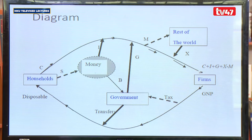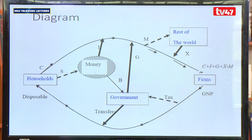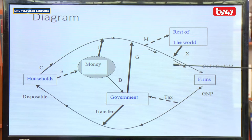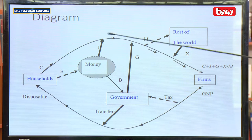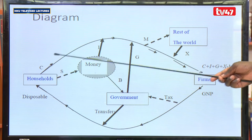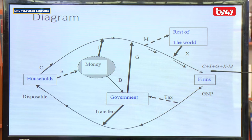The household is considered to be housing the factors of production: labor, capital, entrepreneur, as well as land — all within the household itself. When the household offers their services to the firms, the arrows in the circular flow of income are very important. We have the consumption expenditure, which moves to the firms.